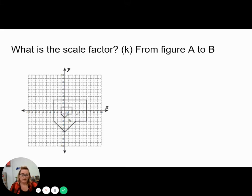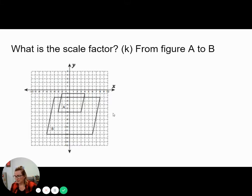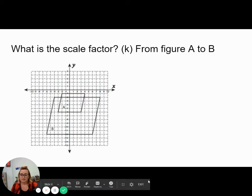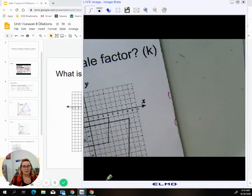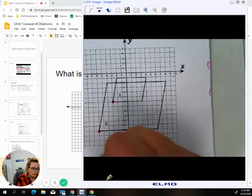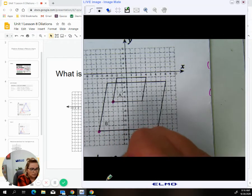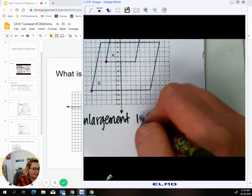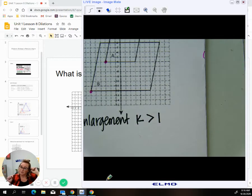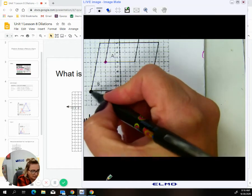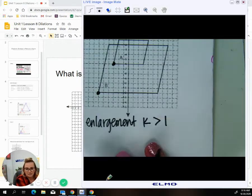So now we're going to look at another one. Notice it says this time we're going from A to B. So that means we are going from a smaller figure to a larger figure. In this case, that means it is going to be an enlargement. Which means that K has got to be bigger than one. So we know we're looking for some sort of a value that is bigger than one. So again, we're going to pick points that you have in common. I would pick like these corner points are nice and easy.